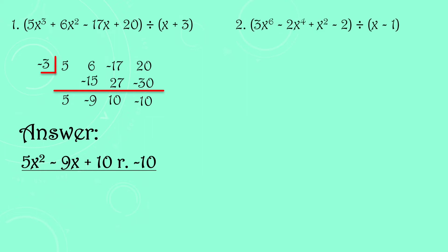Let's have number 2: divide 3x⁶ − 2x⁴ + x² − 2 by (x − 1). Notice there are missing powers — power of 5 and power of 3 and power of 1 are missing — so we place 0 for those. The coefficients in descending order are: 3, 0, negative 2, 0, 1, 0, negative 2.